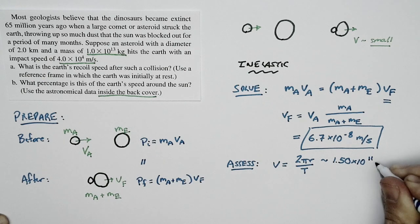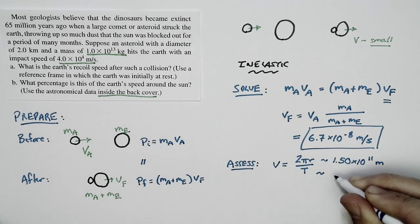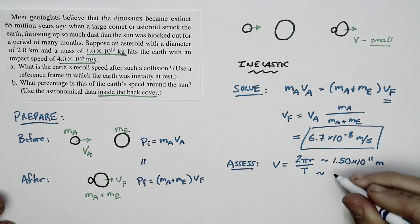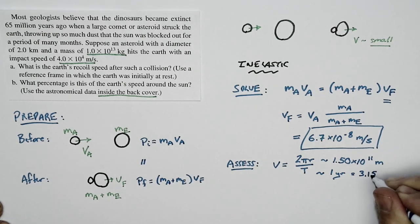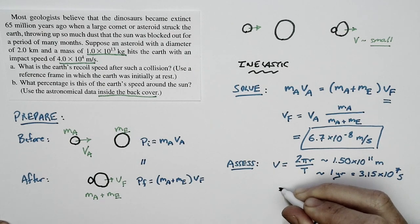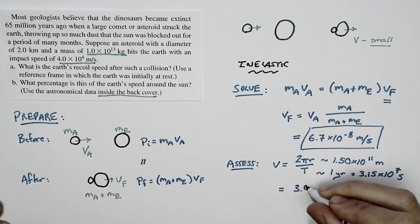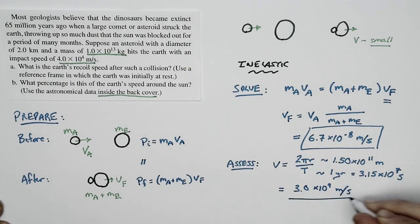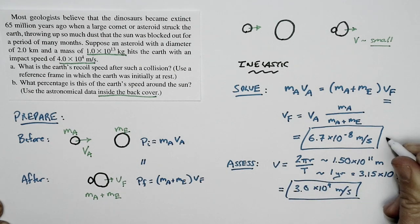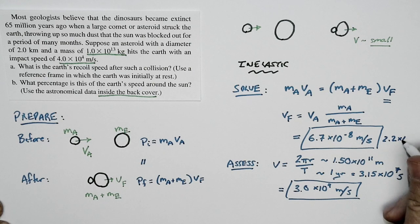The period of the Earth's orbit, of course, is just 1 year. And 1 year is 3.15 times 10 to the 7th seconds. So we end up with the speed of the Earth around the sun of 3.0 times 10 to the 4th meters per second. And that means that this speed that we calculated here as a fraction of the speed of the Earth around the sun is 2.2 times 10 to the negative 10th percent.